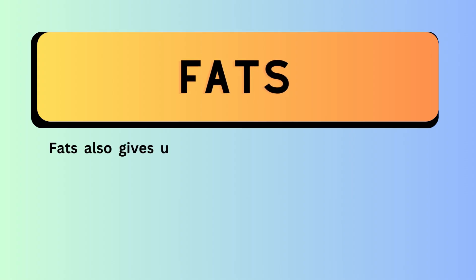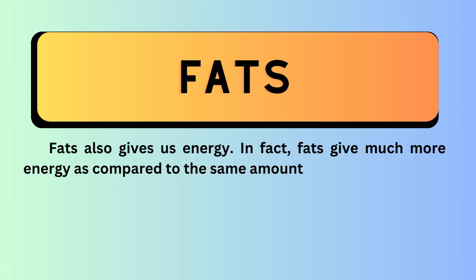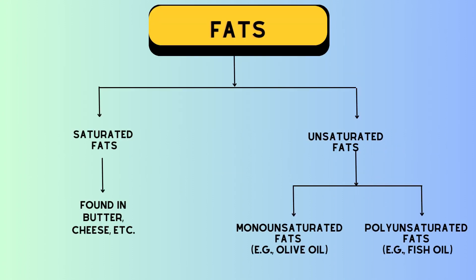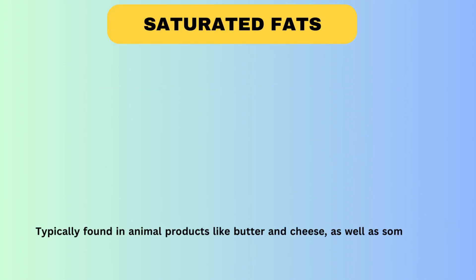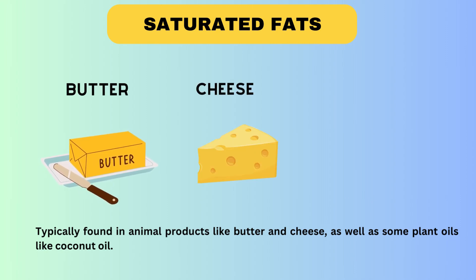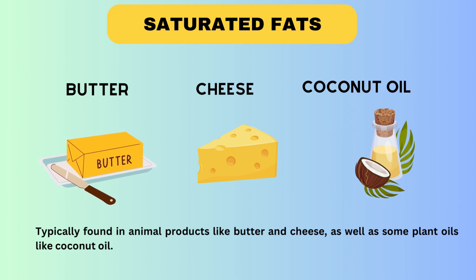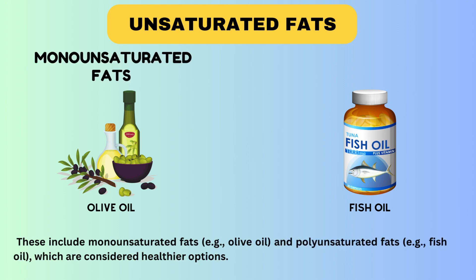Let's explore the third component of food: fats. Fats also give us energy — in fact, fats provide much more energy compared to the same amount of carbohydrates. They come in different types. First, saturated fats, typically found in animal products like butter and cheese, as well as some plant oils like coconut oil. Next are unsaturated fats, which include monounsaturated fats like olive oil and polyunsaturated fats like fish oil — these are considered healthier options.